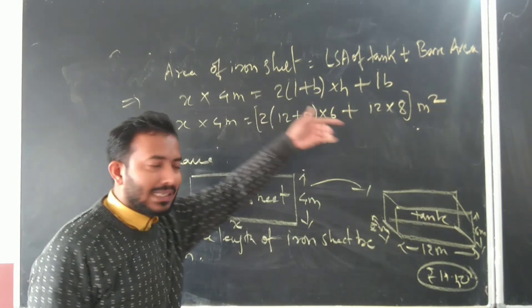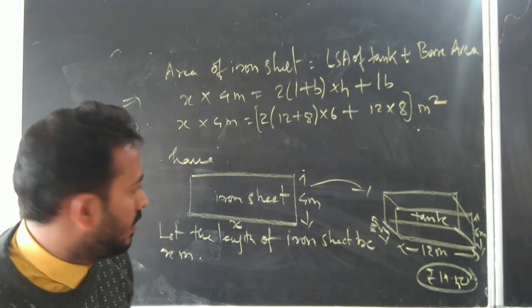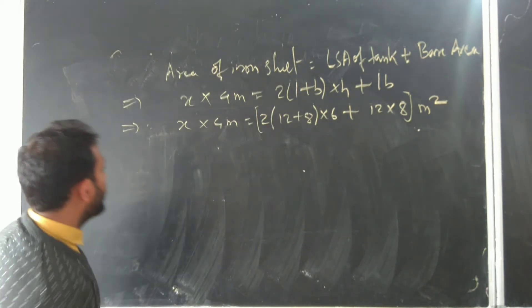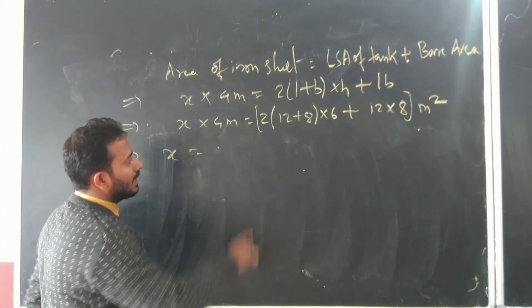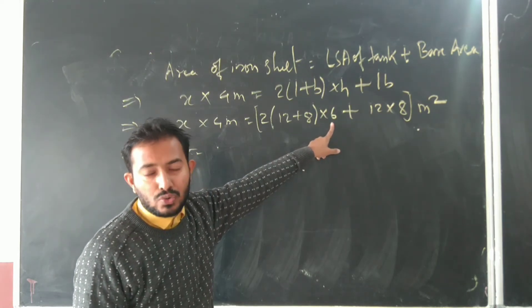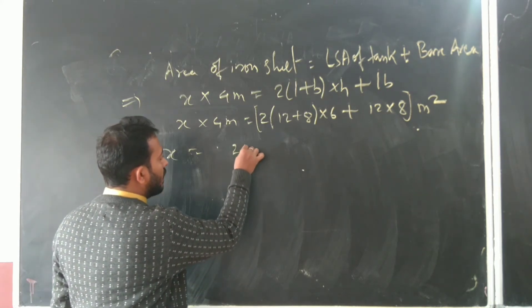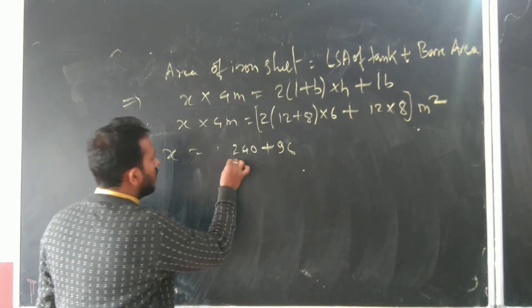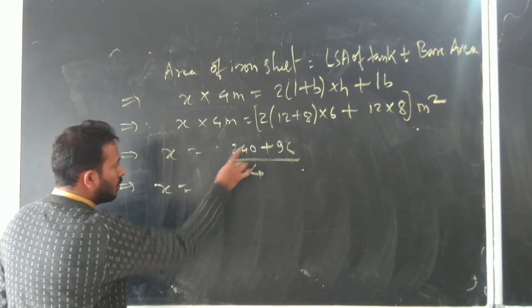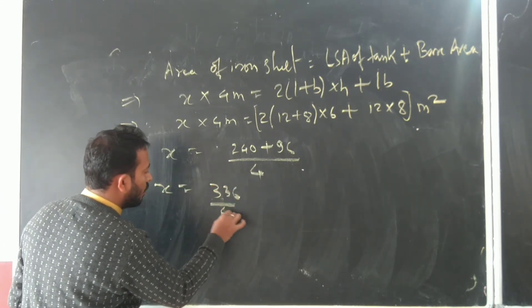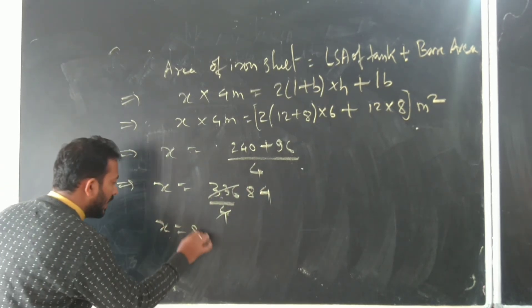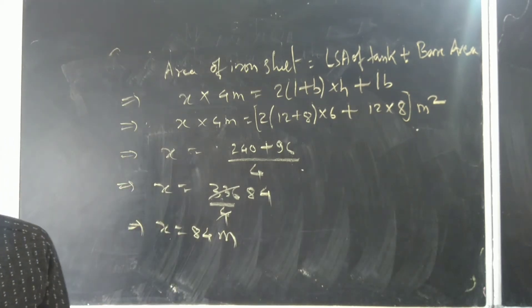From this side: 20 times 2 is 40, 40 times 6 is 240, so 240 plus 96 equals 336. This 4 divides here, so x equals 336 by 4.